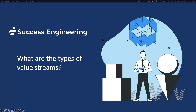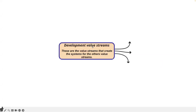We talked about value streams in general, but it turns out there are different kinds of value streams. There's no one right way to delineate these — some people have literally dozens. The most popular delineation is around 14; I use four. The most common type is what's called the development value stream, but Alan Ward in a book years ago talked about how development value streams create what are called operational value streams.